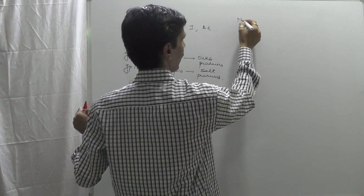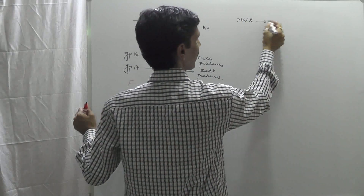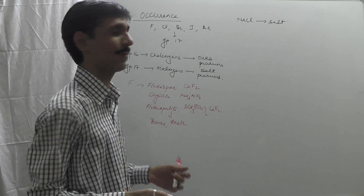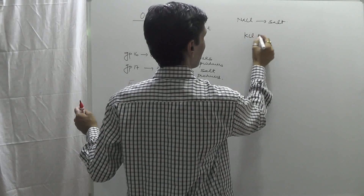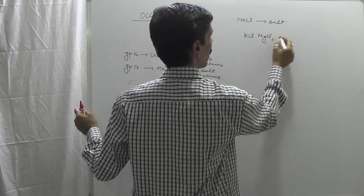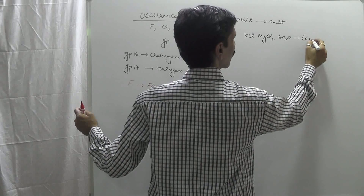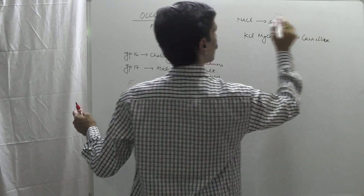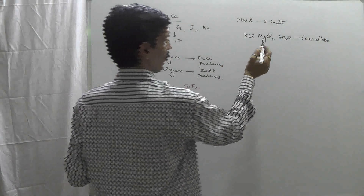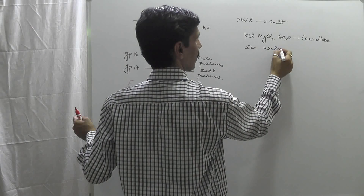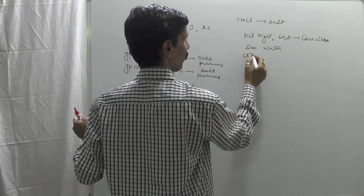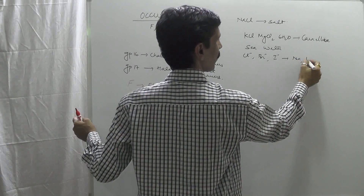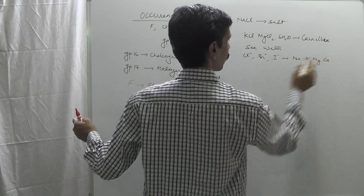When we talk about chlorine, the very first thing that comes to mind is NaCl — common salt — which is one of the most common examples. Chlorine is also found in KCl, and in MgCl2·6H2O which is called carnallite. Most seawater contains chlorides, bromides, and iodides of sodium, potassium, magnesium, and calcium.